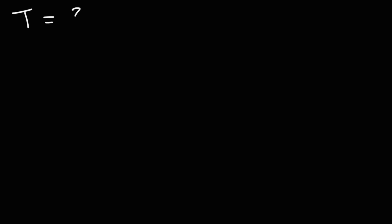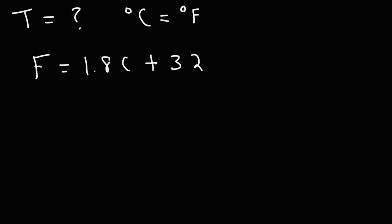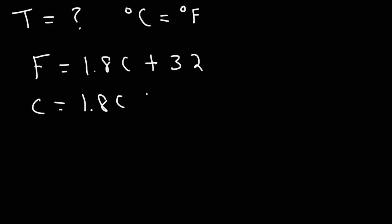Now here's a question for you: at what temperature is the Celsius temperature equal to the Fahrenheit temperature? Feel free to pause the video and think about that one. To find the answer, what we need to do is replace the Fahrenheit value with Celsius, because they're now equal to each other. So C is going to be equal to 1.8C plus 32.